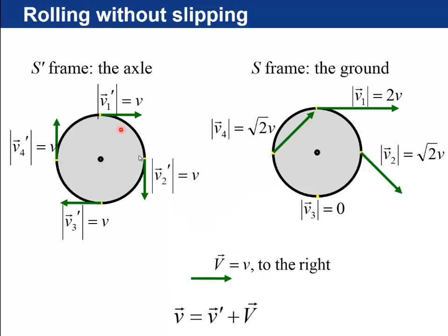So that's the idea, is that in the axle frame it's going all around, in the ground frame, the top is moving at twice the axle speed, every other point is kind of at some intermediate speed, and the bottom point is at zero. You can think of the whole wheel as rotating about a pivot point, which is at the bottom.